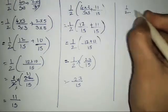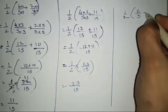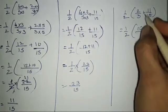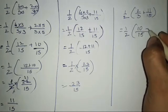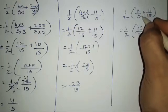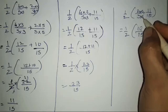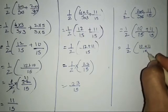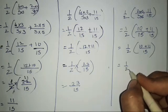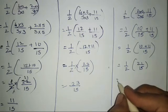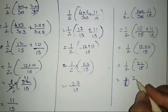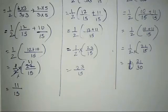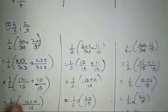For the third rational number, we take 2/3 and 11/15. Half of (2/3 + 11/15). We multiply 2/3 by 5 to get 10/15 to equalize denominators. So half of (10/15 + 11/15) = half of 21/15. Multiplying directly: 21/15 into 1/2 gives 21/30. So these are the 3 rational numbers we have found between the 2 given rational numbers.